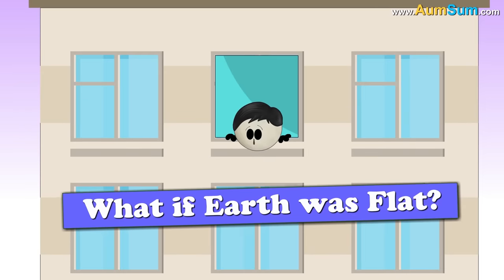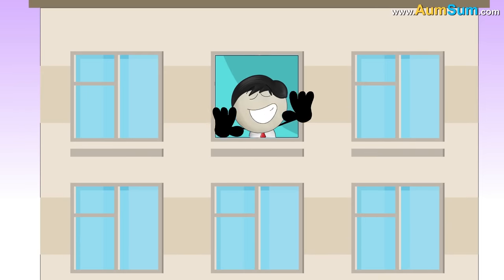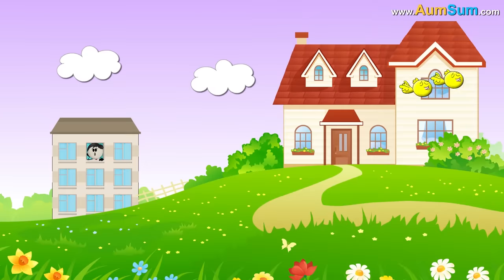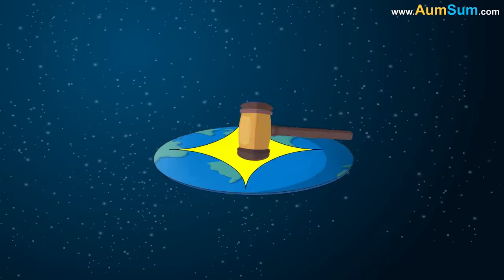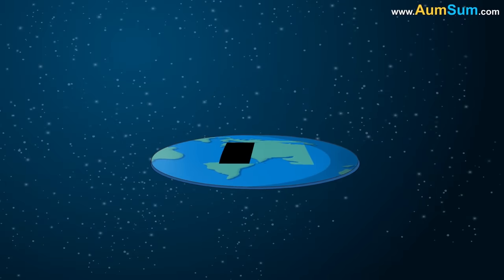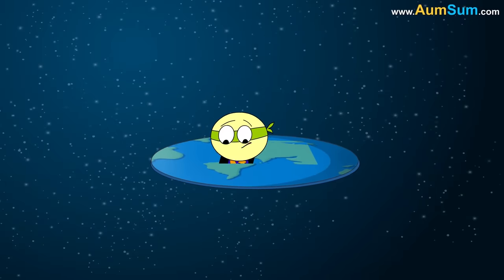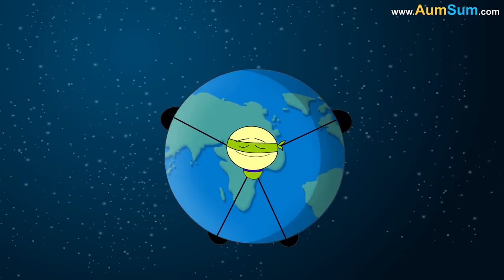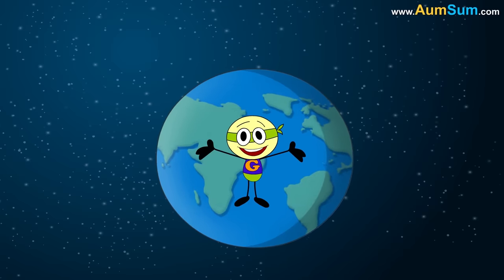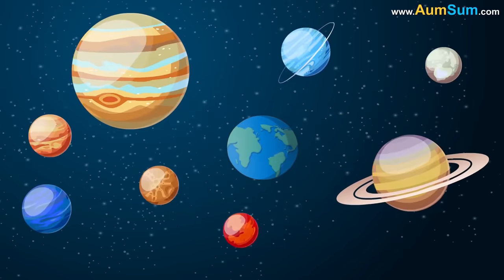What if Earth was flat? I don't like flats, I like bungalows. Oh AumSum. Earth would not remain flat for a long time as gravity will make sure it again pops up into a sphere. Remember, gravity pulls equally from all sides. Hence, planets are spherical.